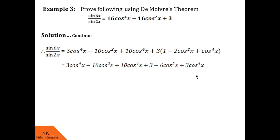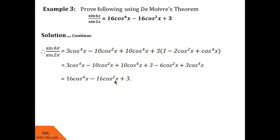Now we combine terms of the same degree: 3cos⁴x + 10cos⁴x + 3cos⁴x = 16cos⁴x. Then −10cos²x − 6cos²x = −16cos²x. The only constant remaining is 3. We see that this RHS is exactly the required RHS. Hence the answer is true.